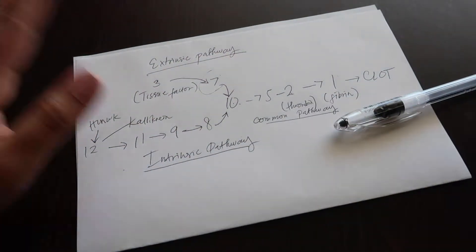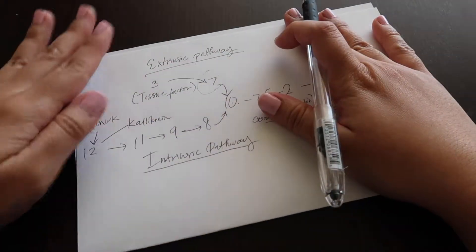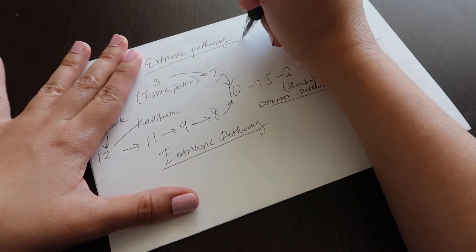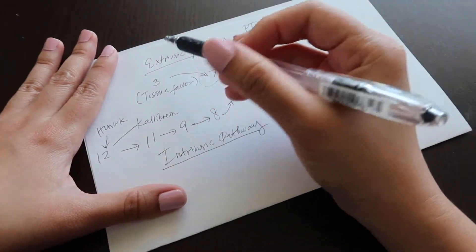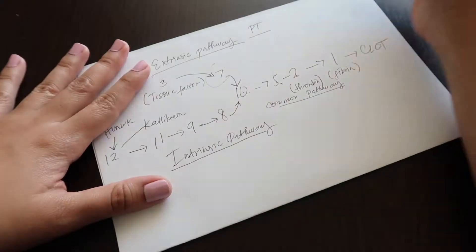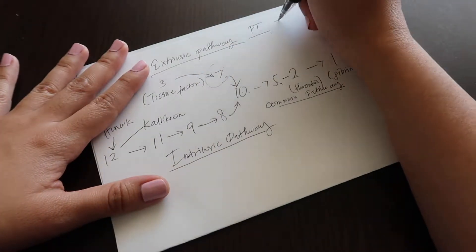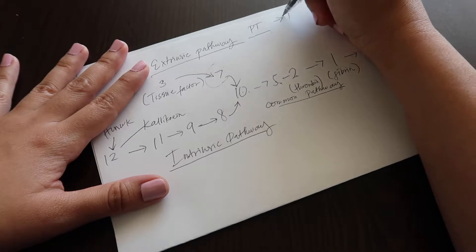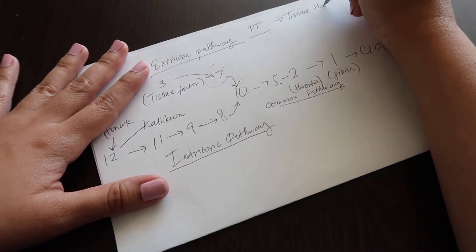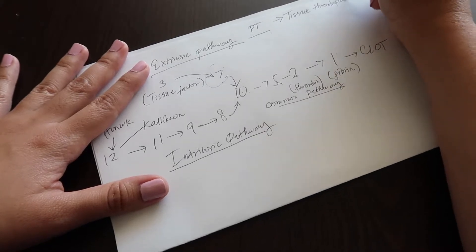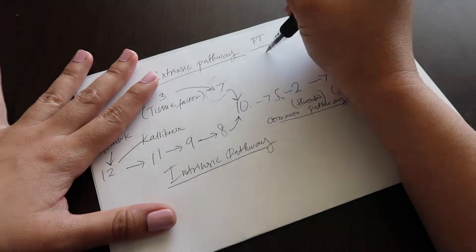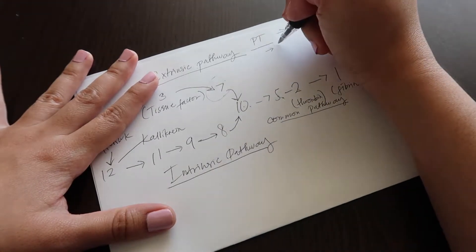So to test for that, we have PT or prothrombin time. This is to test for anything abnormal on the extrinsic pathway, which is really just factor seven for this one. The reagents on the test contain tissue thromboplastin.